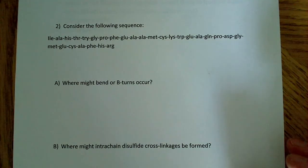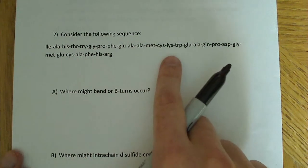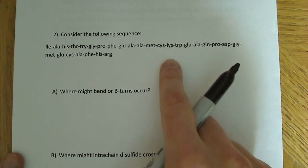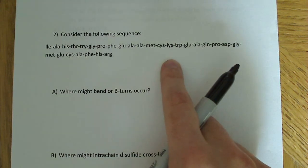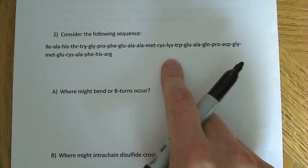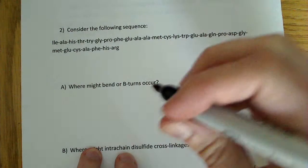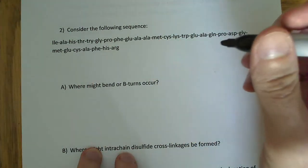The first question wants me to say where might bends or beta turns occur. So I'm looking at this sequence here, all these amino residues, and I'm asked where might a beta turn occur. Well, the thing to know about beta turns - this is the key point and the most important thing to solving this problem - is that...